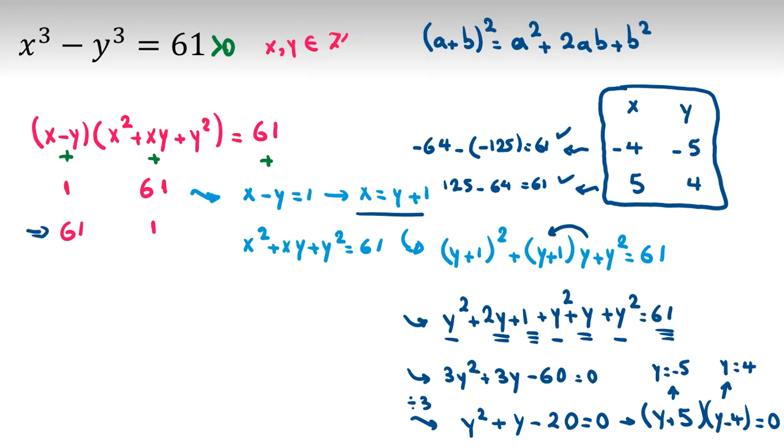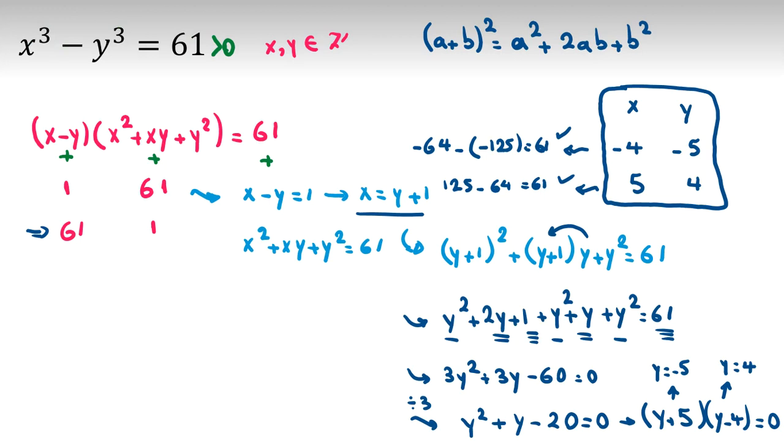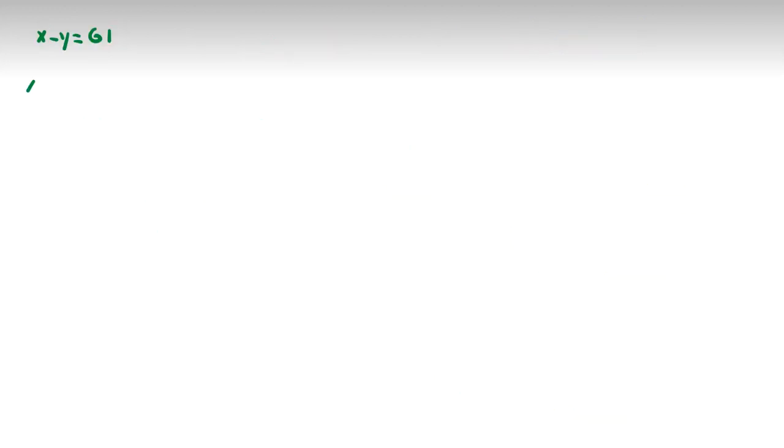Now we should check this case. In this case, x minus y is 61. Let me write x minus y equals 61, x squared plus xy plus y squared equals 1. From here, you conclude x equals y plus 61. Now if I replace it here, y plus 61 squared plus y plus 61 times y plus y squared equals 1.